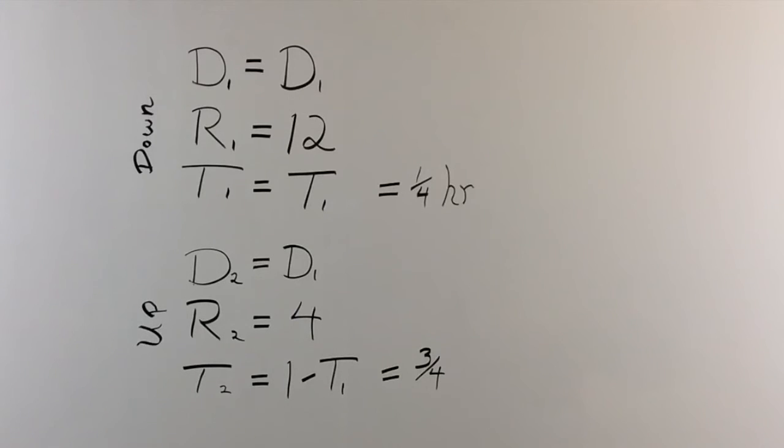Twelve times T1, one quarter, equals three miles. R2, four times T2, three quarters, four times three quarters equals three miles. And we know that D1 equals D2. So they're both supposed to be three miles. And they are. We have filled in all of our slots. And it all makes sense. And that is the correct answer. A quarter of a mile.